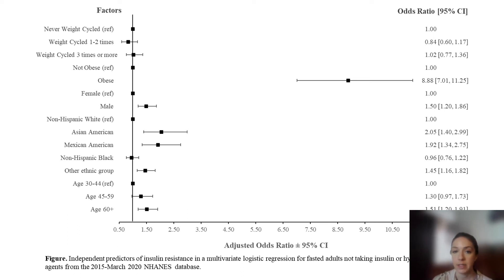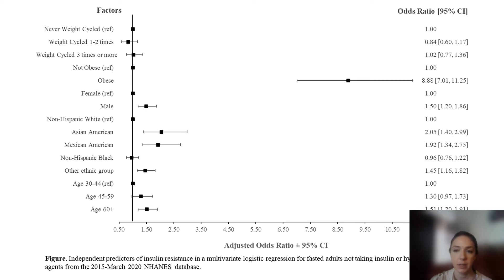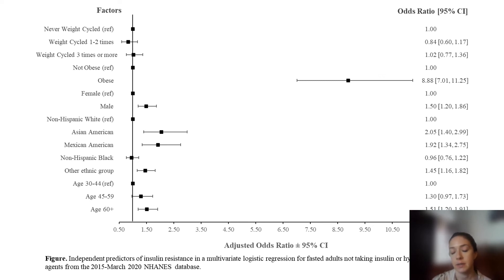However, men had a 50% increased likelihood of insulin resistance compared to women. Looking at race and ethnicity, compared to whites, Asian Americans and Mexican Americans were about two times as likely to develop insulin resistance. Non-Hispanic blacks were neither at a lower nor higher odds of developing insulin resistance compared to whites. Additionally, people ages 60 and older were at a 50% increased likelihood of developing insulin resistance than people of younger age.